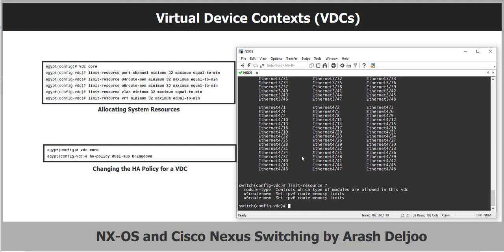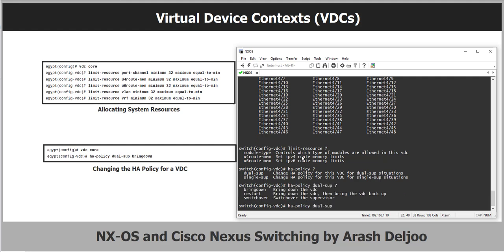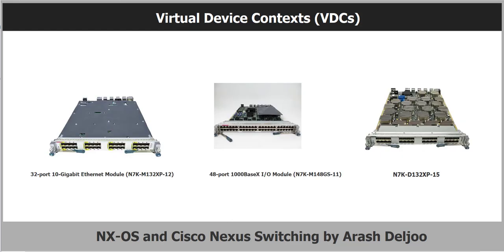Under the VDC name configuration, you use 'ha-policy' and then specify the supervisor type, for example 'dual-supervisor', followed by the action such as 'bring-down'. The HA policy will depend on the use case or VDC role. For example, if you have a dual supervisor module and the VDC role is development or test, the HA policy may be to simply shut down the VDC. If the VDC role is for core and aggregation, the HA policy would be switchover.